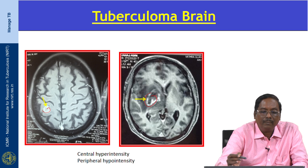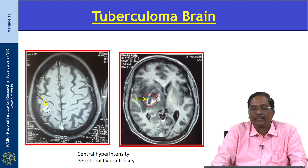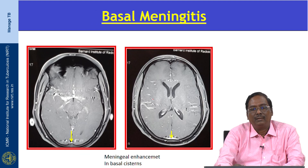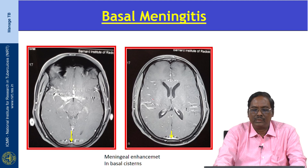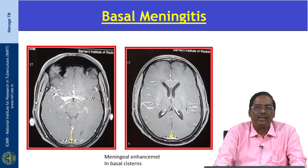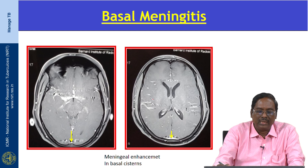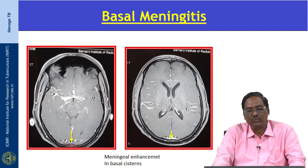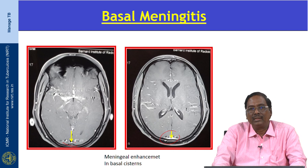Here there is peripheral hypointensity and central hypointensity on imaging. This is basal meningitis, believed to be caused by rupture of a brain focus into cerebrospinal fluid. MRI shows abnormal meningeal enhancement that typically involves the basal cisterns, corresponding to gelatinous exudate. There is abnormal enhancement visible in the basal cisterns.